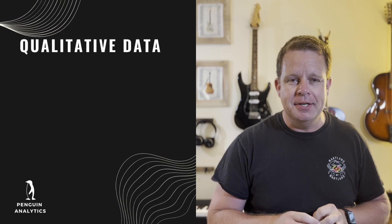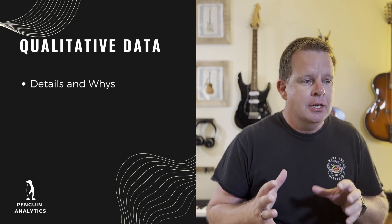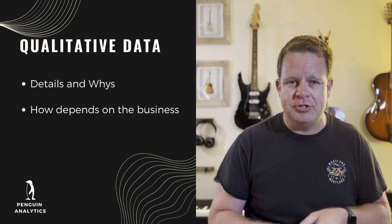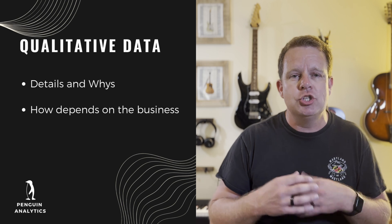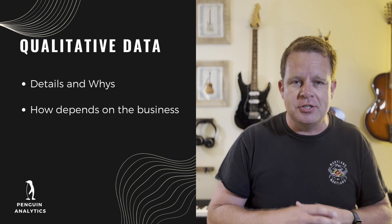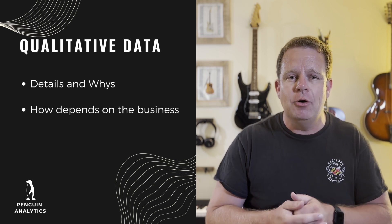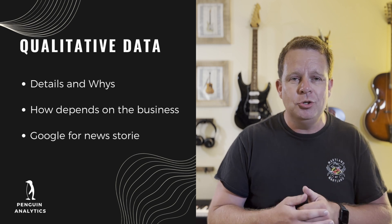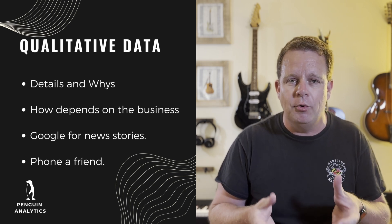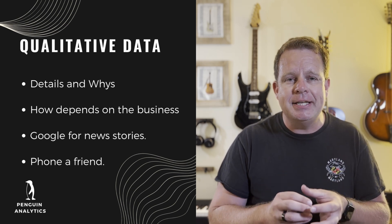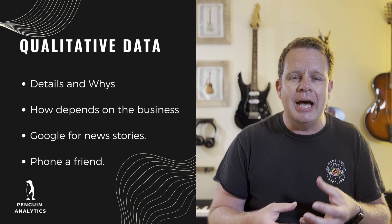The next step is to gather qualitative data — all the details about why something might have happened. There's a ton of different ways to do this; qualitative data is almost infinite. My background is in hospitality: we look at individual hotels, travel trends, airlines, and all those pieces contribute to the story. When I find a trend in the quantitative data, I'll research with qualitative data to find out what's going on — Googling a particular market and time frame, or reaching out to contacts in that place for context. Qualitative data provides the details that help you color in between the lines drawn by the quantitative data.